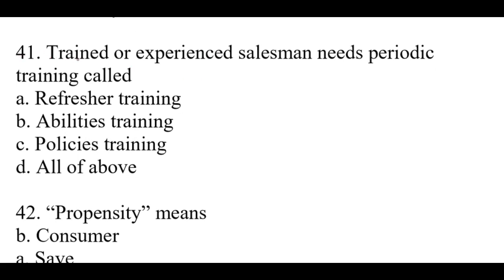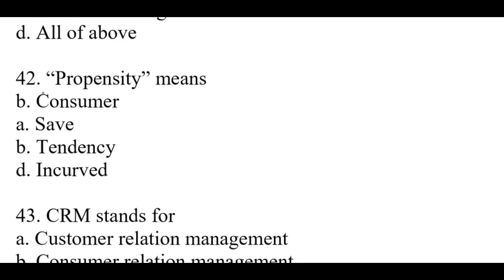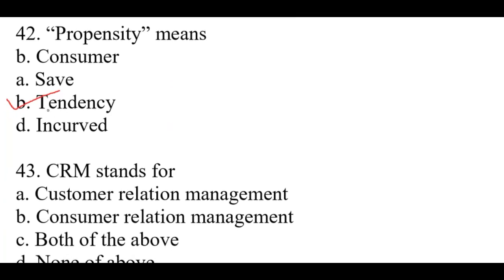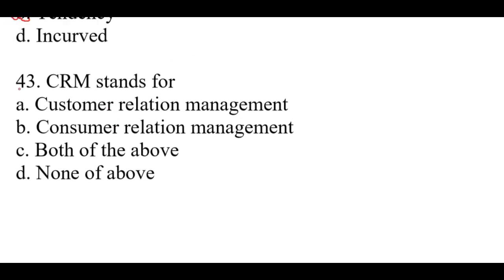Question number forty-one: Trained or experienced sales personnel who need periodic training — right option is A: Refresher training. Question number forty-two: Propensity means — right option is C: Tendency. Question number forty-three: CRM stands for — right option is A: Customer relationship management.